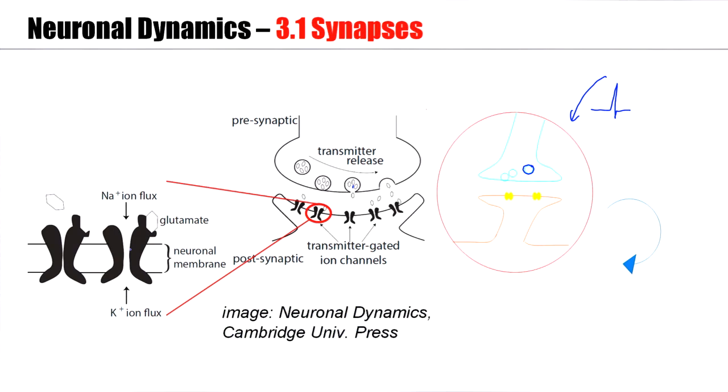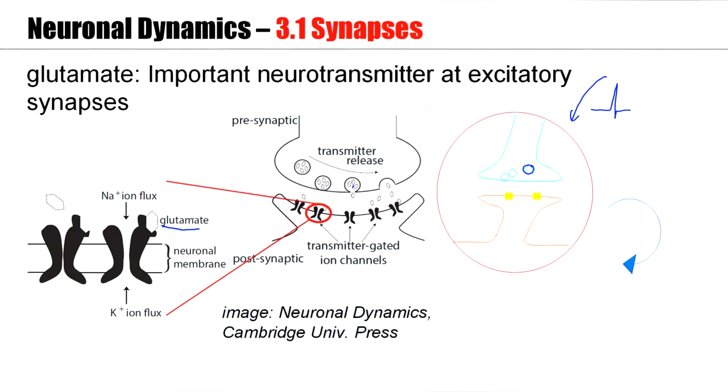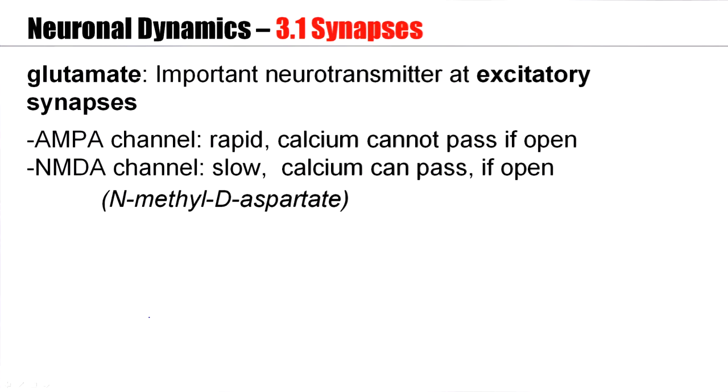An important neurotransmitter is glutamate. In fact, this is the most important transmitter at excitatory synapses. One of the excitatory channels is the so-called AMPA channel. If it opens, it makes a thin channel wide enough for sodium and potassium to pass through, but not wide enough for calcium. There's another type of channel on excitatory synapses. That's the so-called NMDA channel. If it's open, then calcium can pass through. The dynamics of NMDA is slower than that of the AMPA channel.